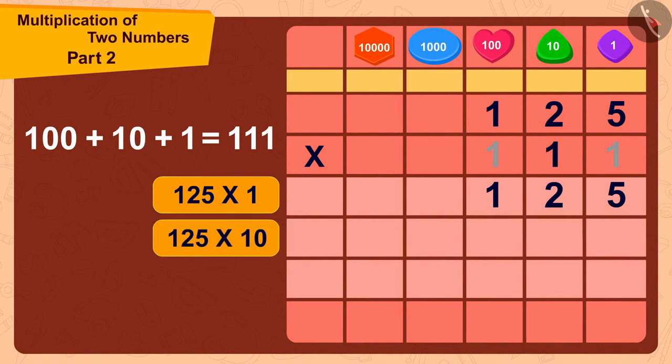Now we will multiply 125 with 10. We will do it easily in this way. First we will write 0 here, then we just have to multiply 125 with 1. In this way, 125 times 10 would be 1250.